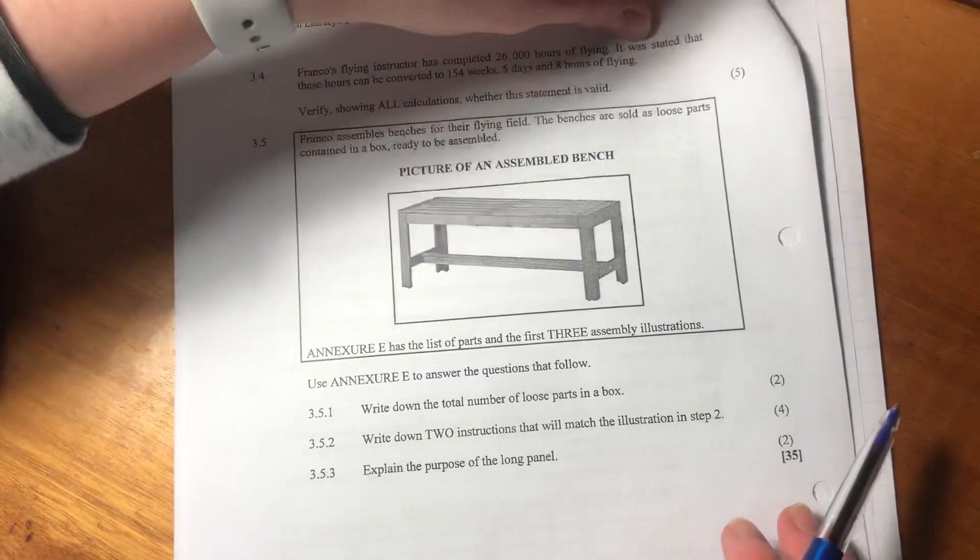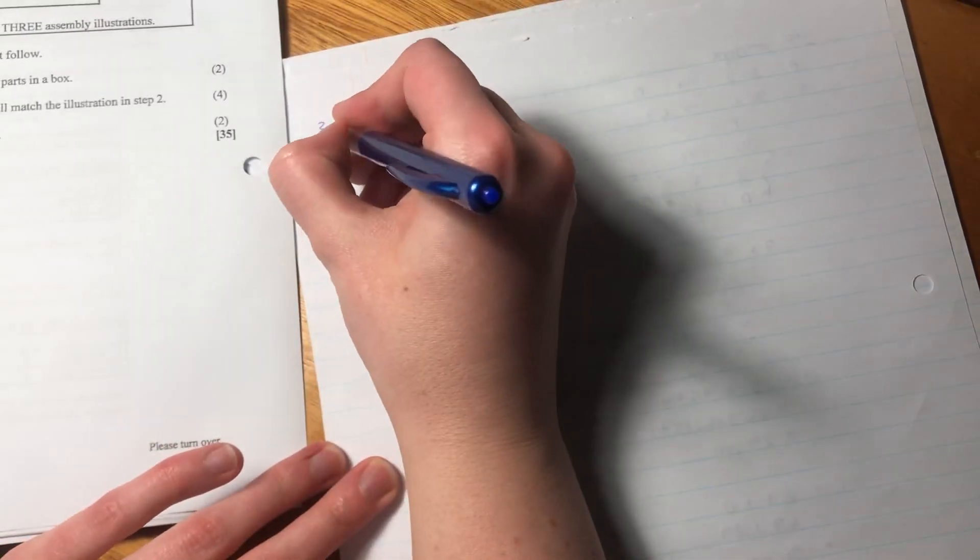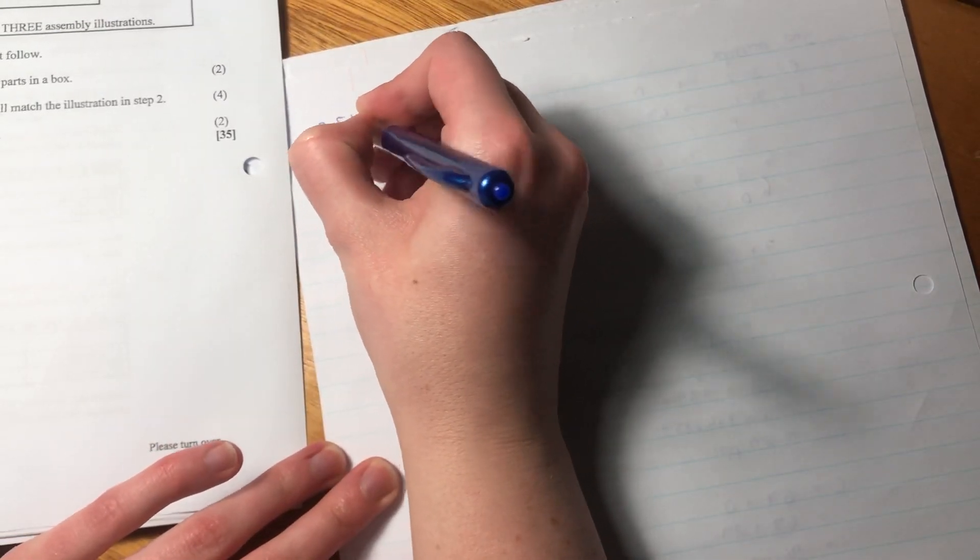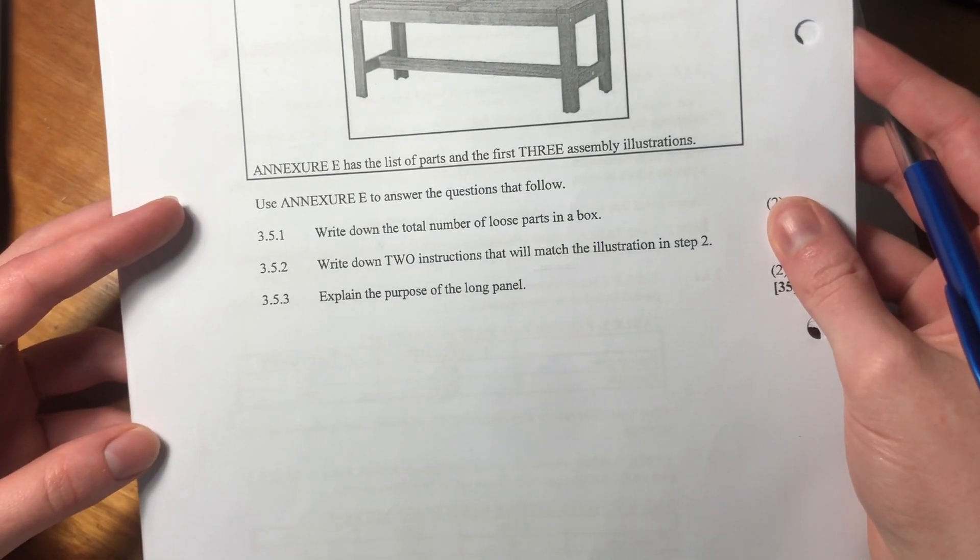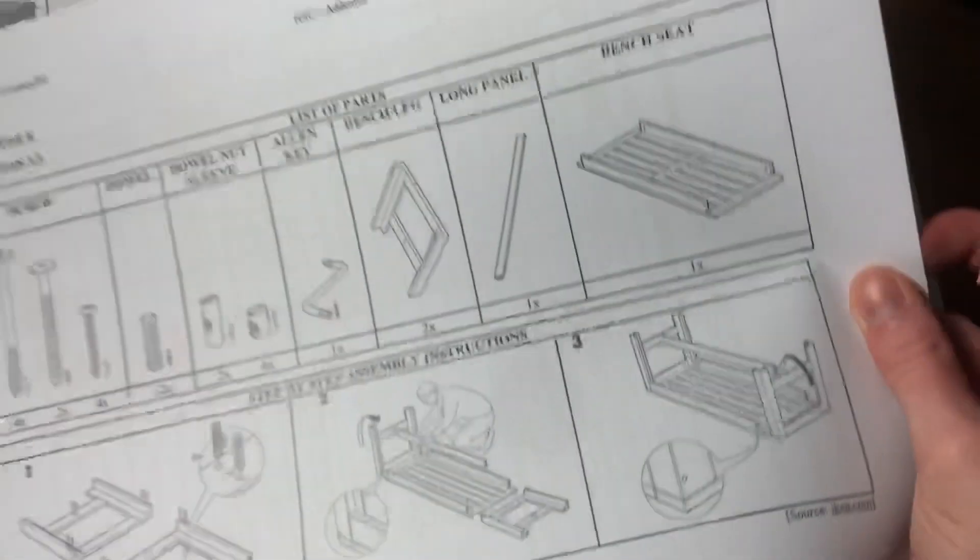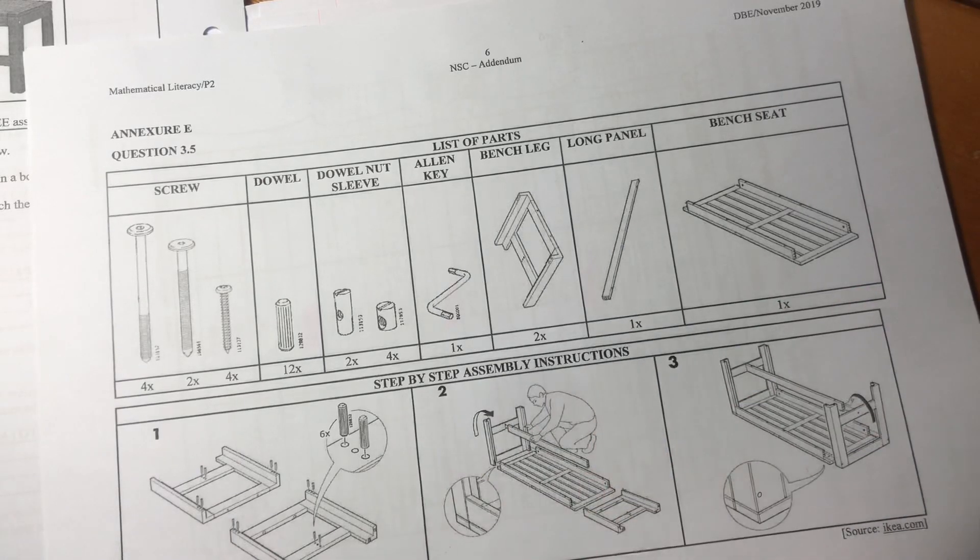So let's jump in and do 3.5.1. Let me make sure you can see what I'm saying and what I'm writing. 3.5.1 says, write down the total number of loose parts in the box. So let's calculate the loose parts in the box. We might need our calculator, but we can also do it in our head.